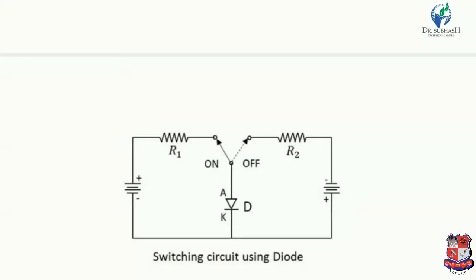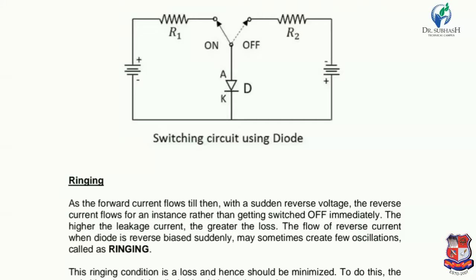Now let us discuss the ringing phenomenon. As the forward current flows, when a sudden reverse voltage is applied, the reverse current flows for an instant rather than switching off immediately — it flows for a specific time period before turning off. The higher the leakage current, the greater the loss. The flow of reverse current when the diode is suddenly reverse biased may sometimes create a few oscillations called ringing. These oscillations cause distortion in the signal waveform, and this phenomenon is known as the ringing phenomenon of a PN junction diode.